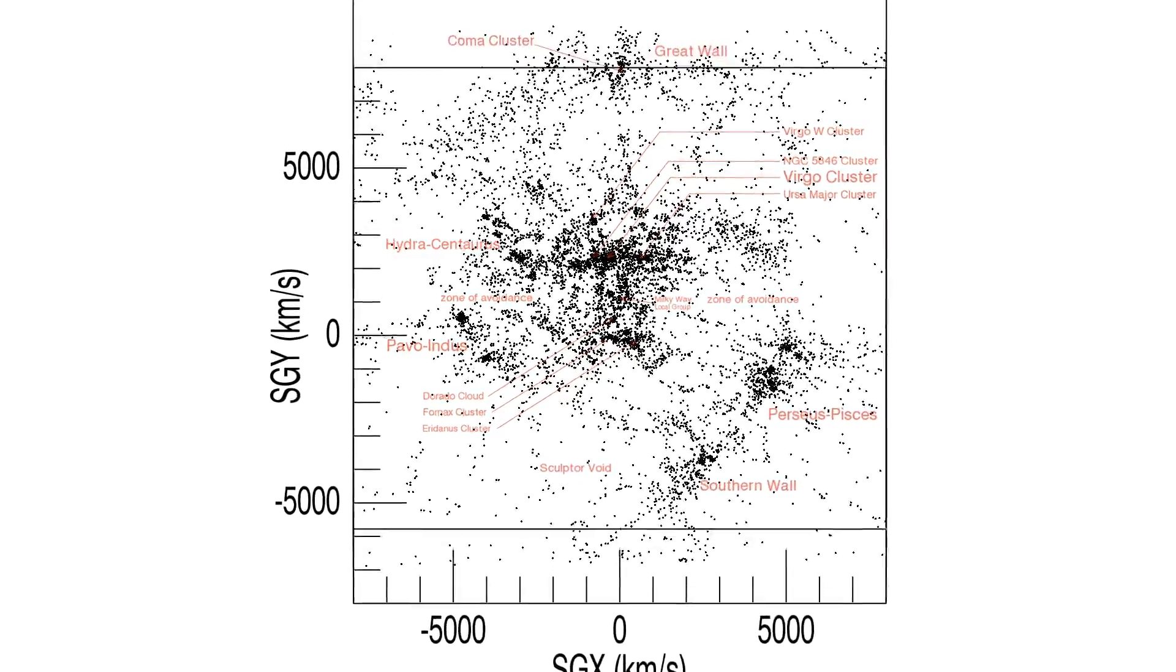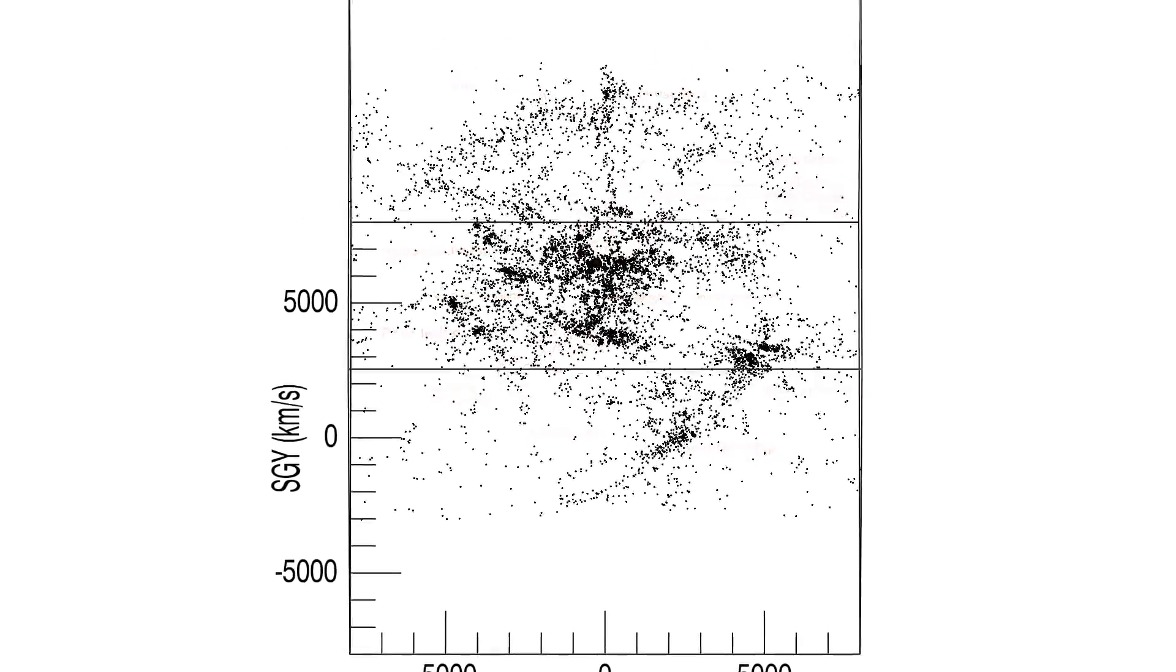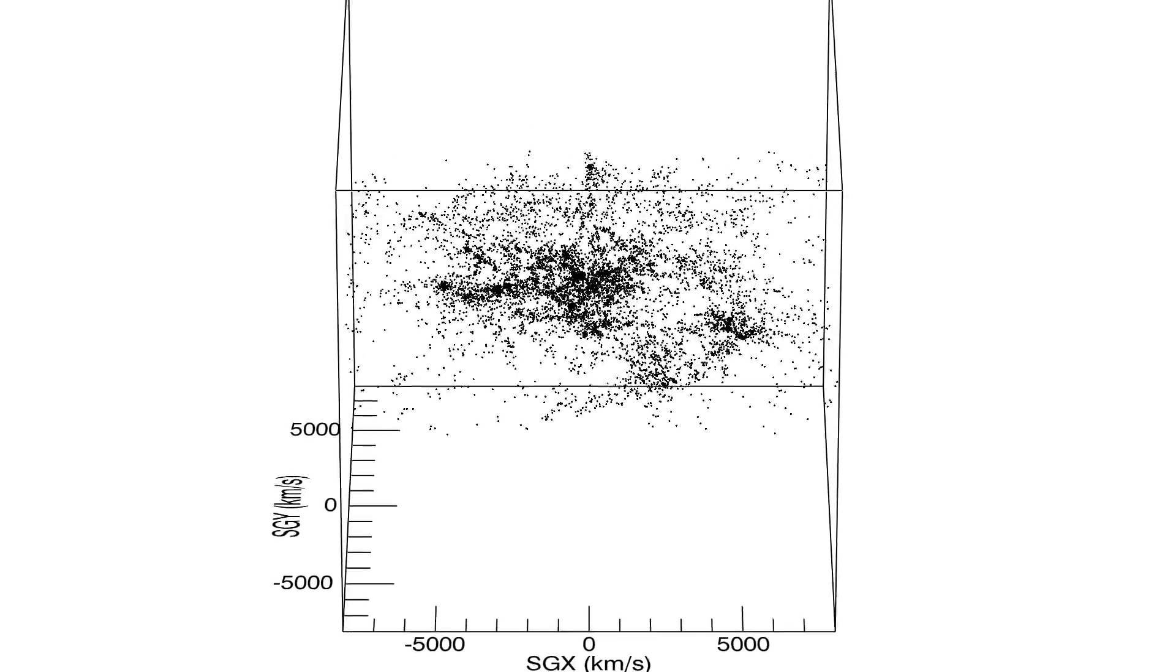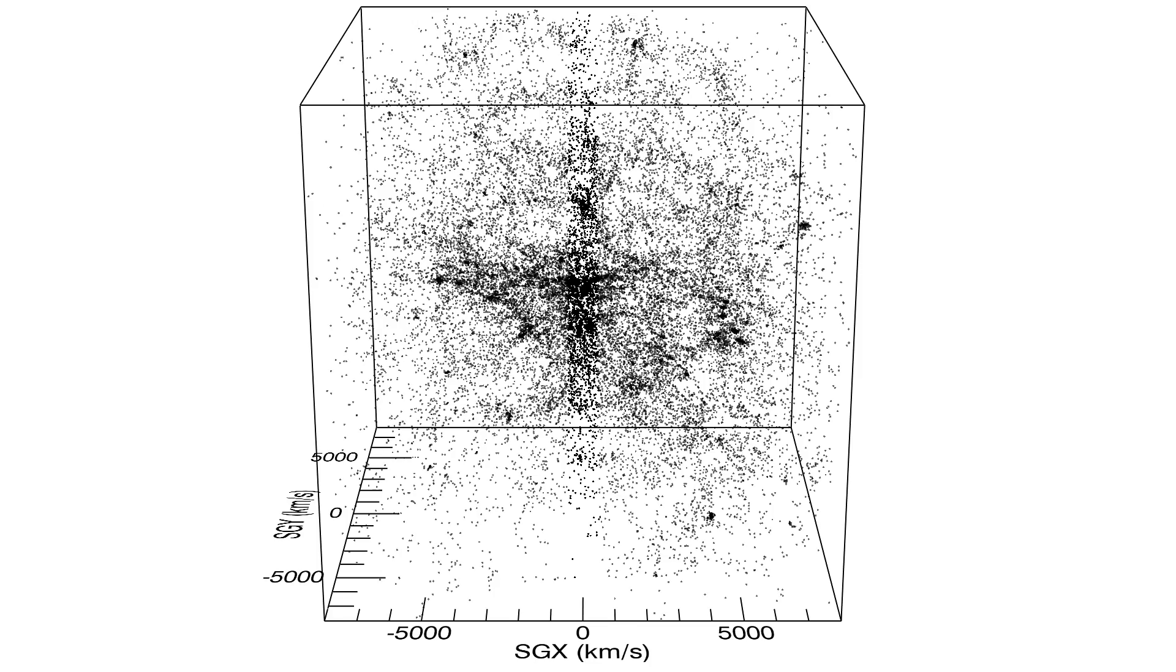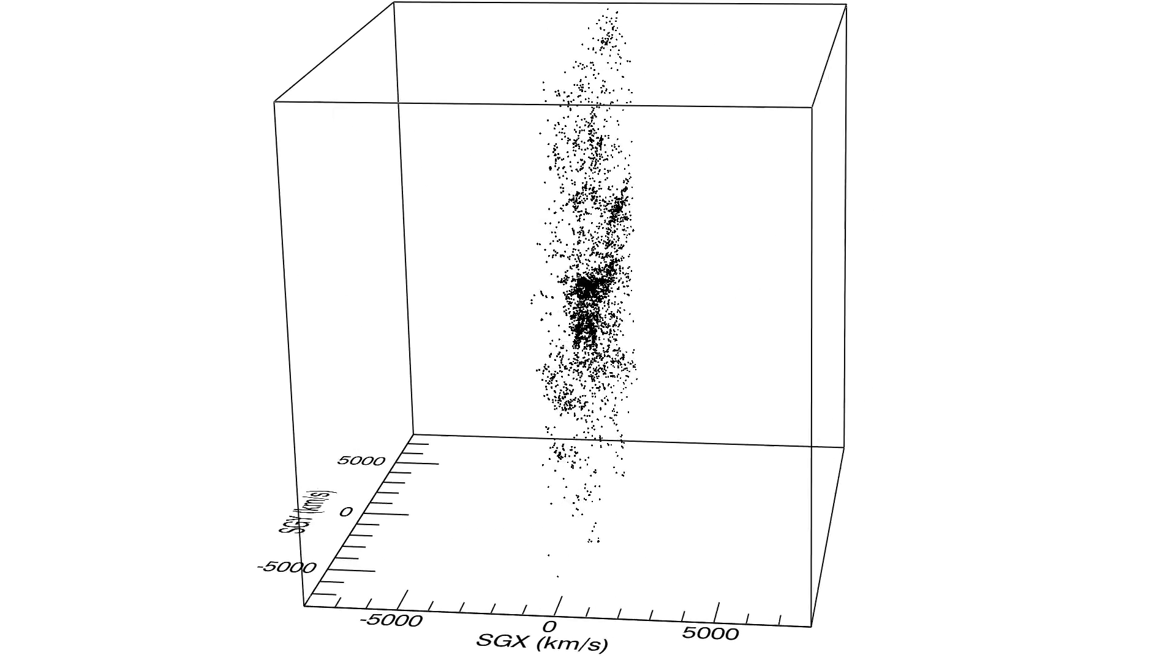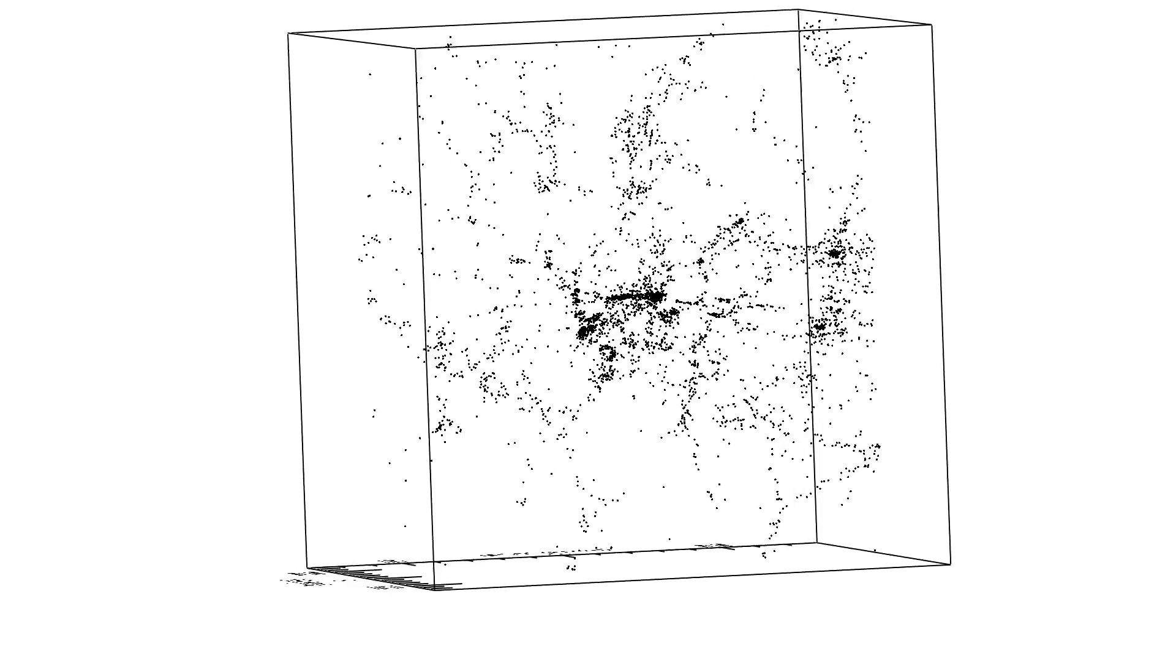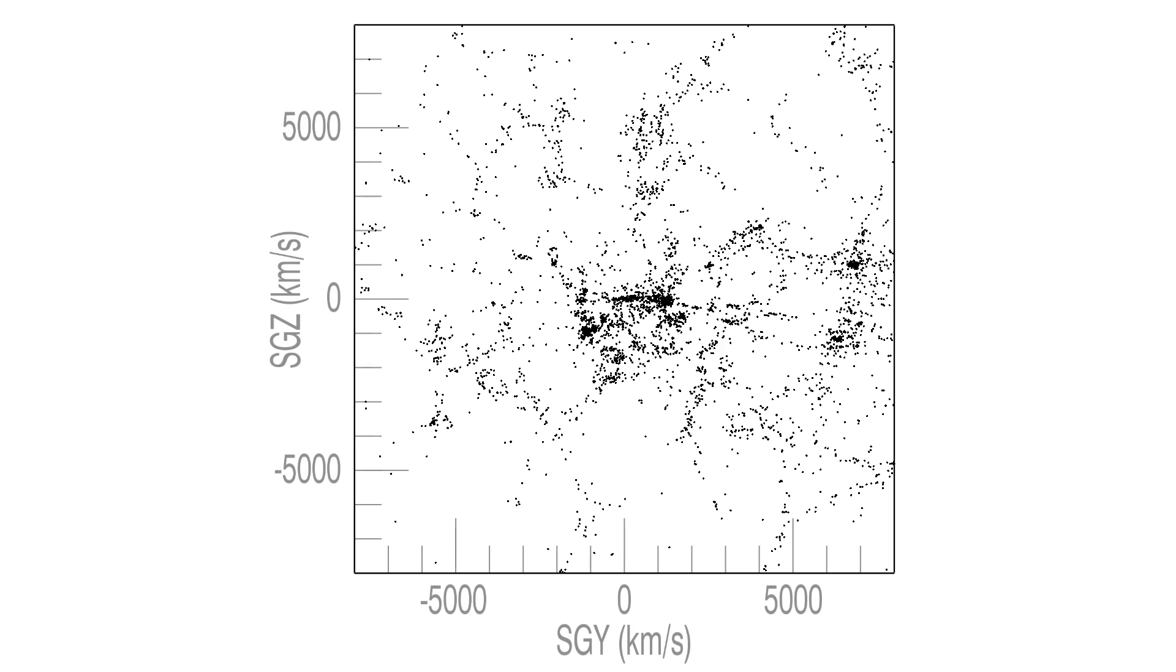We rotate 90 degrees and re-sliced to a slab 1,000 km per second thick. The slice includes the Virgo and Fornax clusters, the local sheet, and local void near the center.